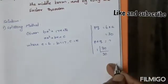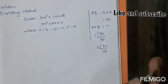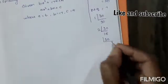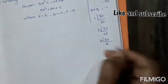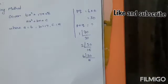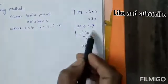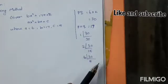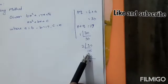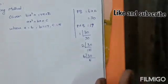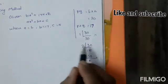The factors of 30 are: 1 × 30 (sum = 31), 2 × 15 (sum = 17), 6 × 5 (sum = 11). So 2 + 15 = 17. This gives us the middle term. So we use 2 and 15.